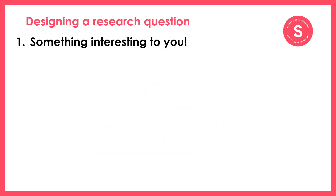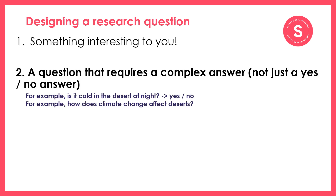There are five guidelines to consider when designing a research question. Number one: make sure it's on a topic that you're interested in. Number two: make sure it's a question that requires a complex answer — in other words, one that you can't answer with yes or no. For example, 'Is it cold in the desert at night?' can be answered with yes or no. But 'How does climate change affect deserts?' can't be answered with a yes or no, so that's an example of a complex answer.